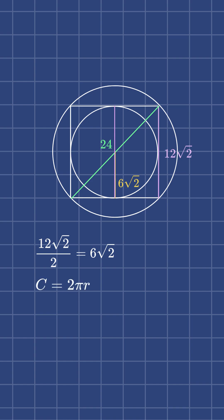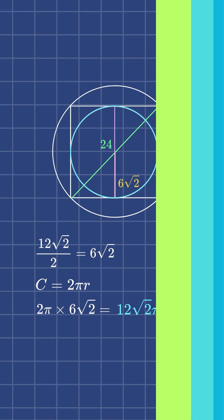Then we can go back to the circumference formula and plug in to find our answer. Our final answer is 12√2π.